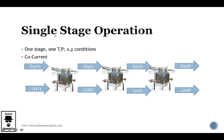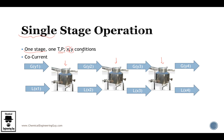This is the main idea of multiple stages: we work with several single stages. Each container is one stage, but we arrange them in series. All stages have the same temperature and pressure conditions, but they do not have the same liquid and gas phase compositions. Y1, Y2, Y3, Y4 are all different — Y decreases as we move to the right, and X increases as we go to the right.